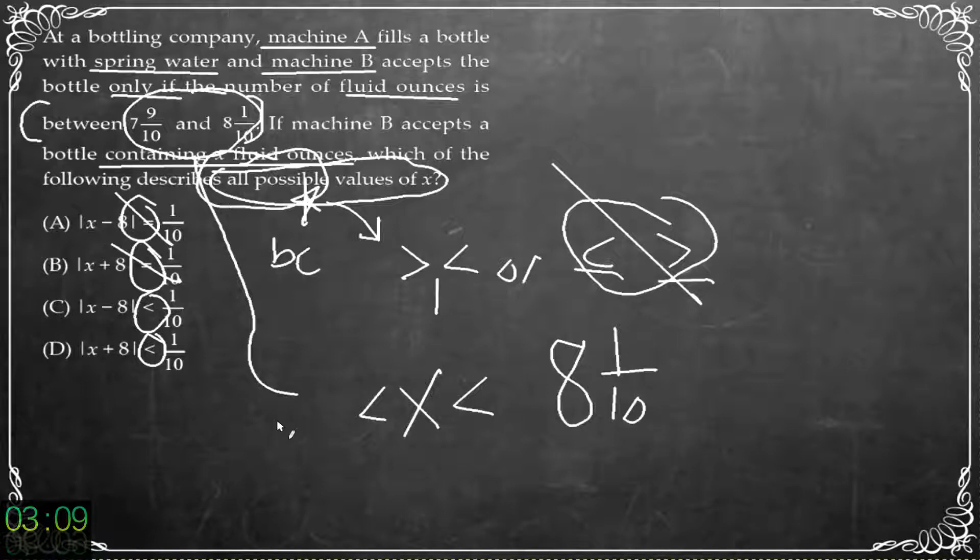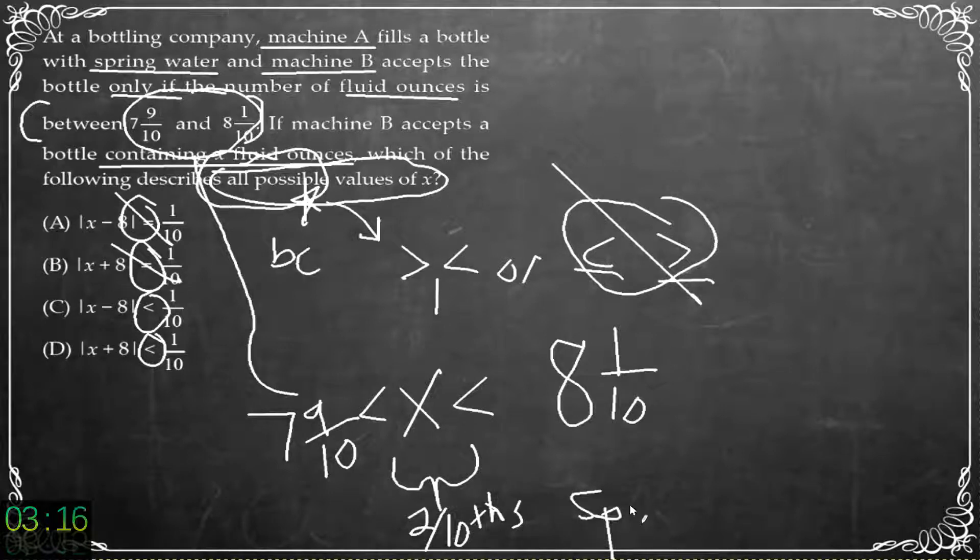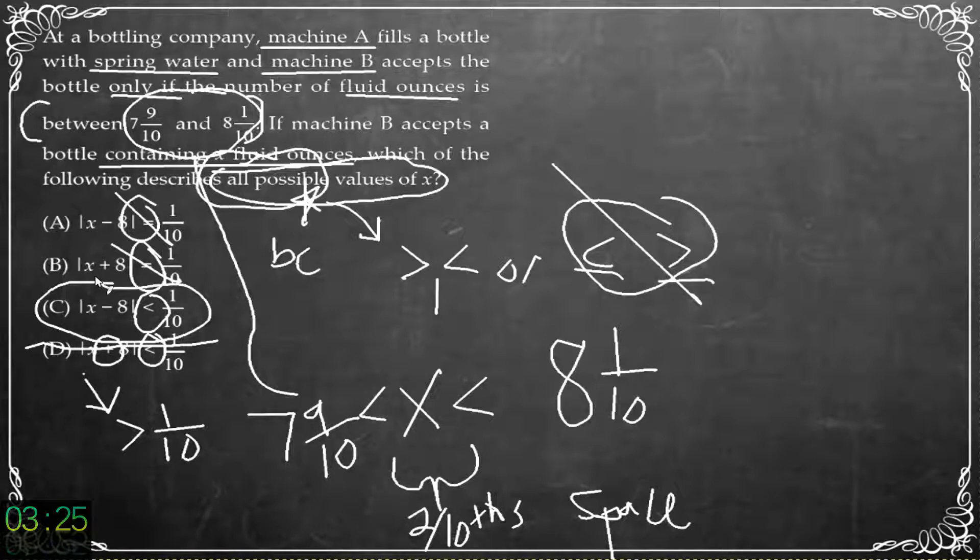So x is going to be between the 7.9 and the 8.1. So all of our answers we have without the equal so it's going to be about two-tenths of a gap. And of course the absolute value of x plus 8 will not be less than 0.1. It's going to be greater than 0.1 which means our answer is C.